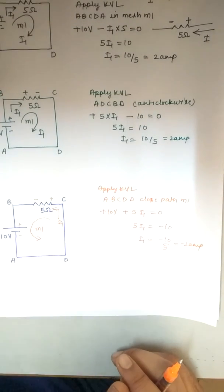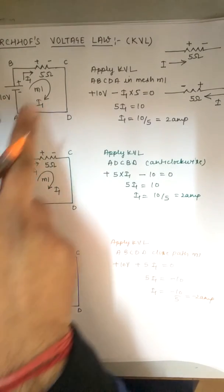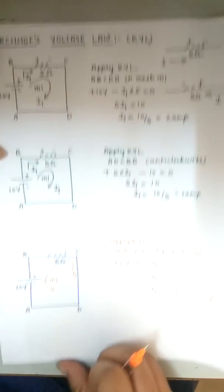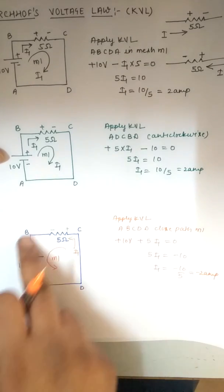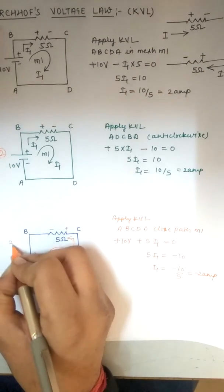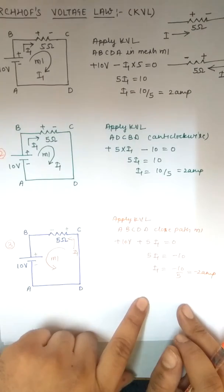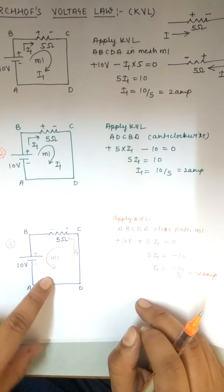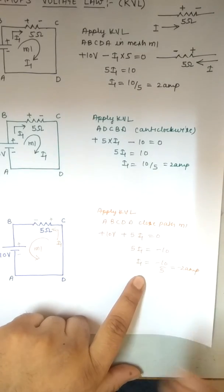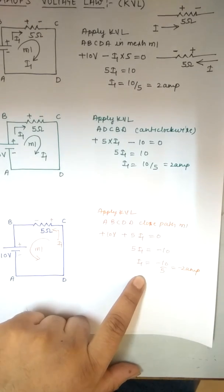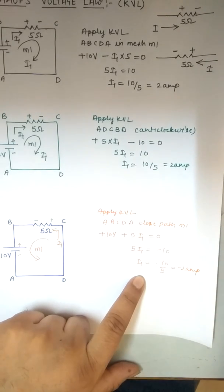We solved the same question in three different ways. In case one: current assumed clockwise, KVL applied clockwise. In case two: current assumed clockwise, KVL applied anticlockwise. In case three: current assumed anticlockwise, KVL applied clockwise. The answers for cases one and two are the same. In case three the answer is negative because the assumed current direction is opposite. The negative sign tells you the actual direction differs from your assumption. You don't need to worry — your answer will be reflected correctly regardless. We will solve more typical problems in the next lecture.